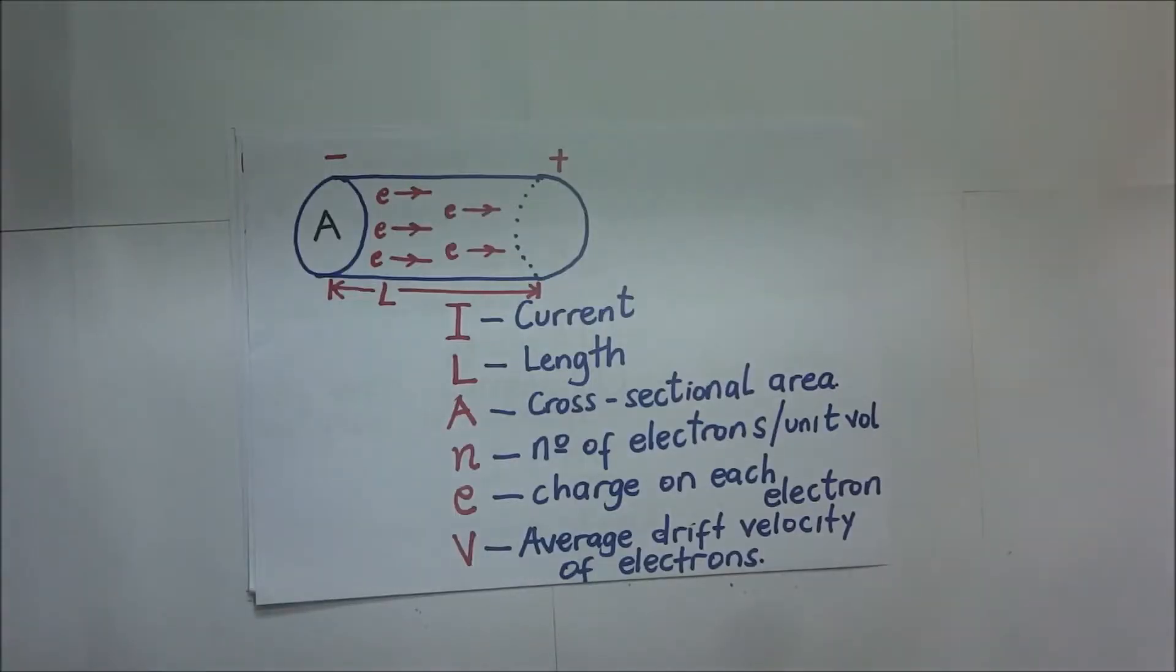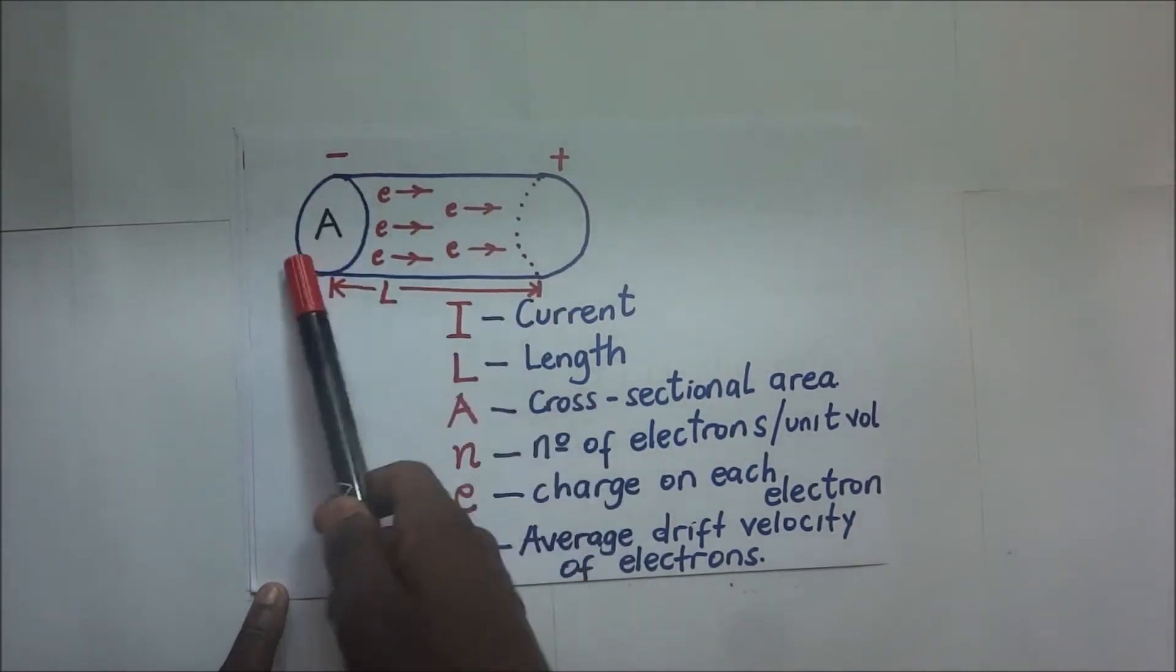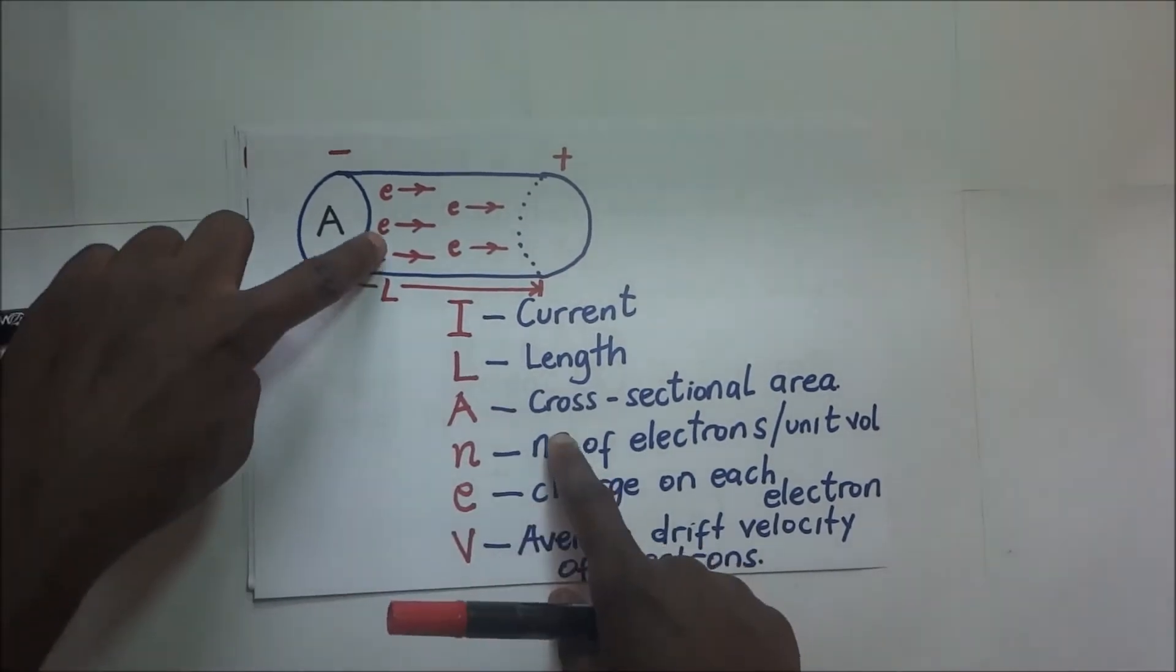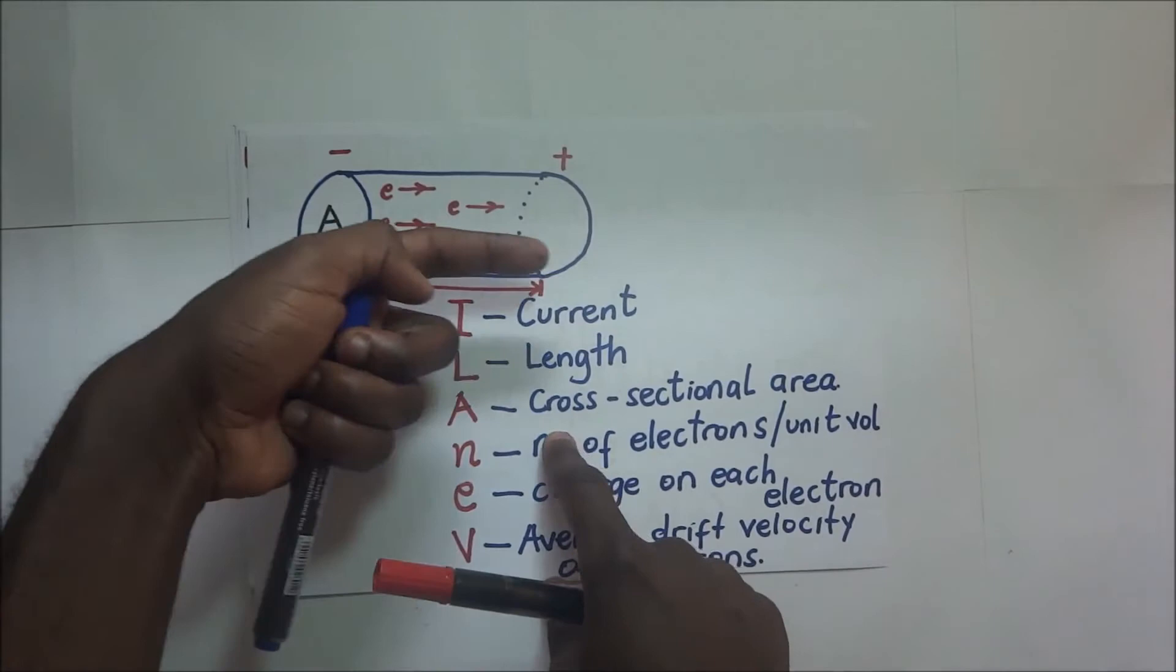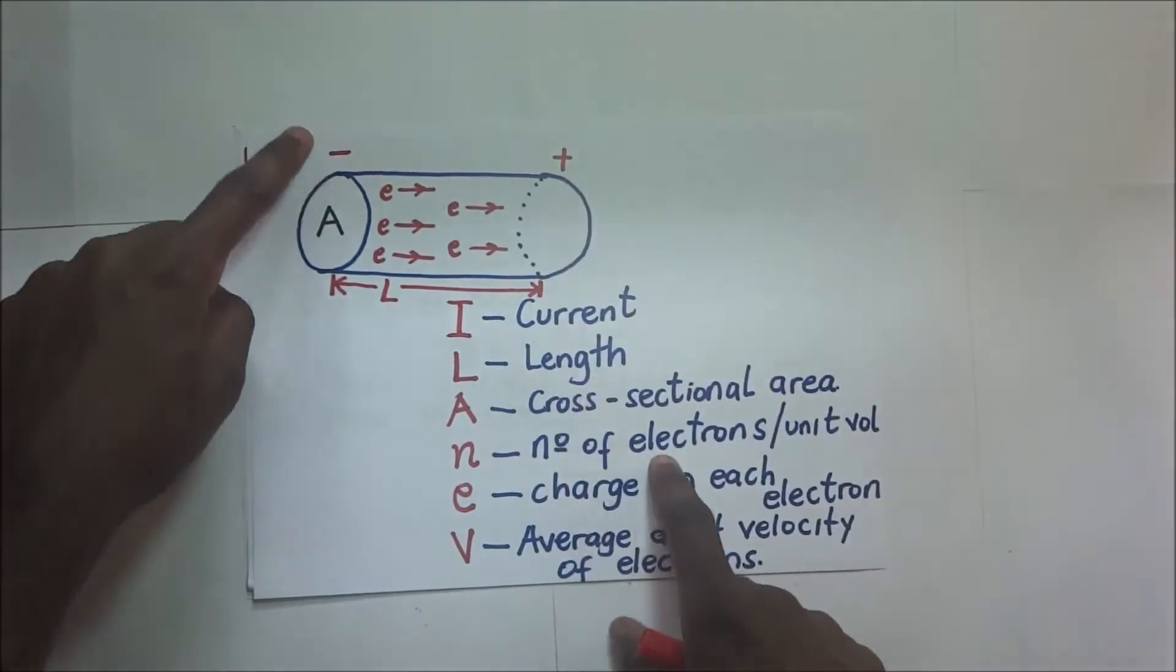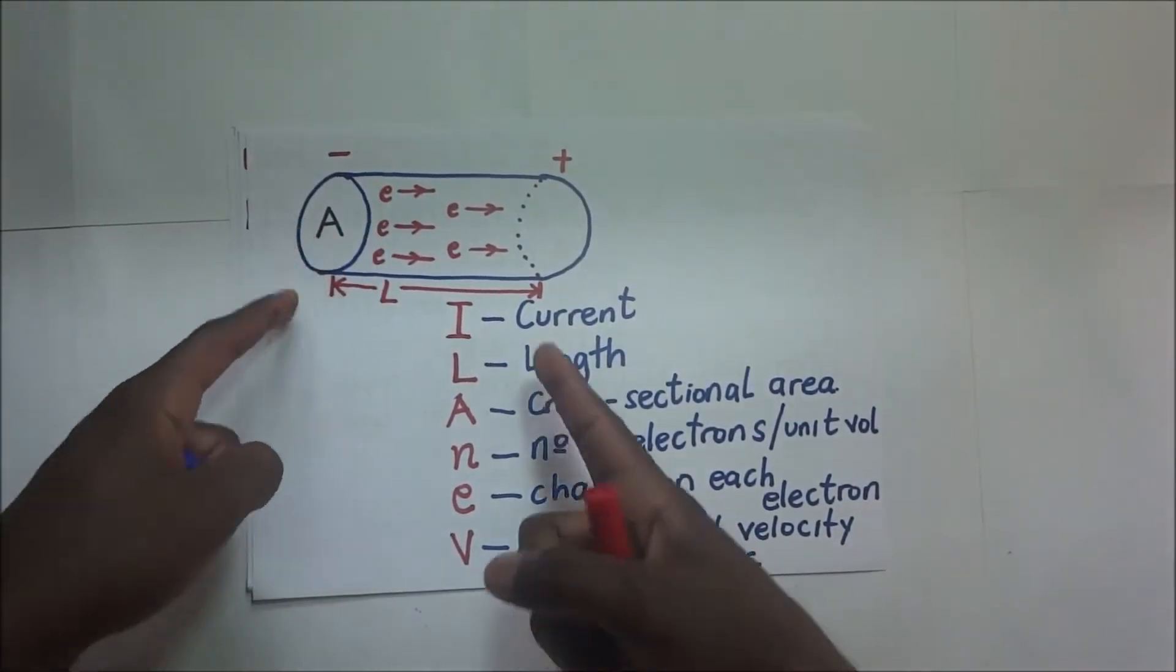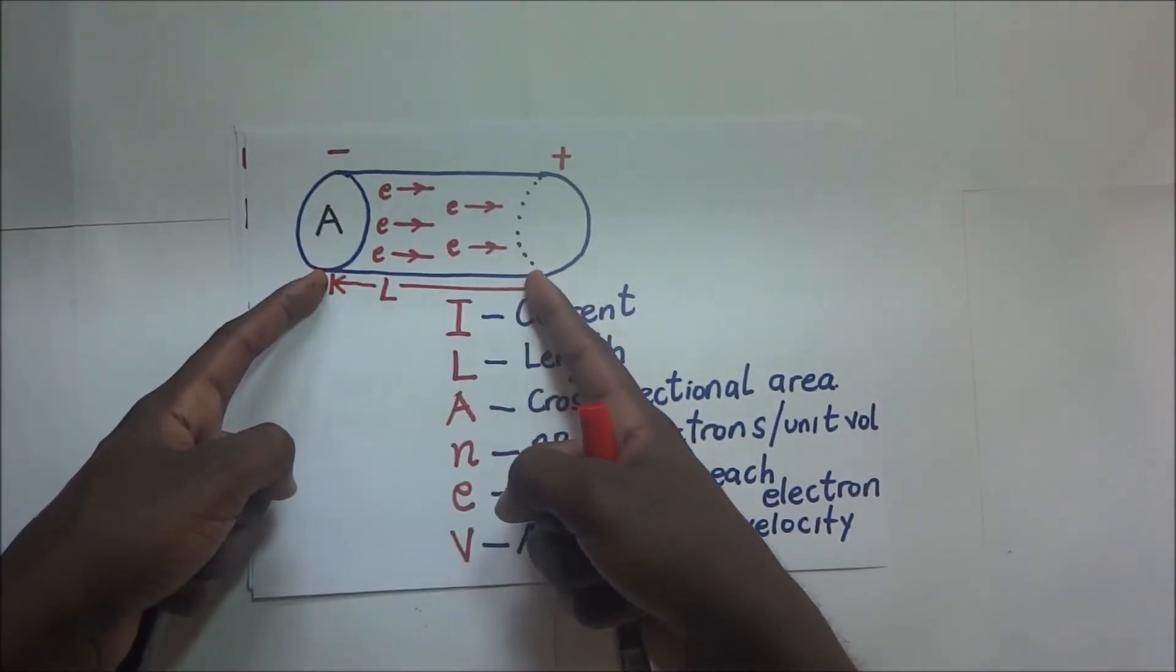Now, right before us, we have a model diagram. This is a wire, a conductor. It has these free moving electrons that we've talked about. They are moving in that direction. Of course, that is the direction that is opposite to the direction of the field. This is the positive end. That's the negative end. This wire has a cross-sectional area we are calling A and it has a certain length L.